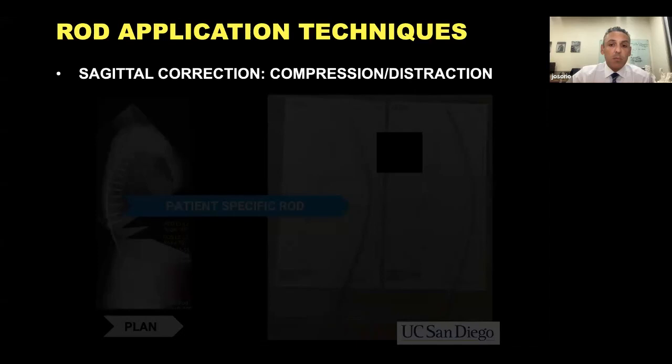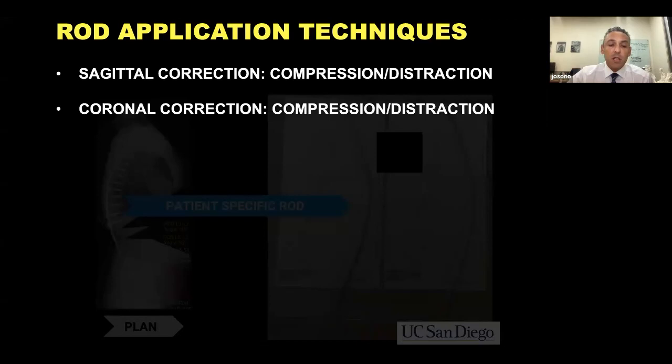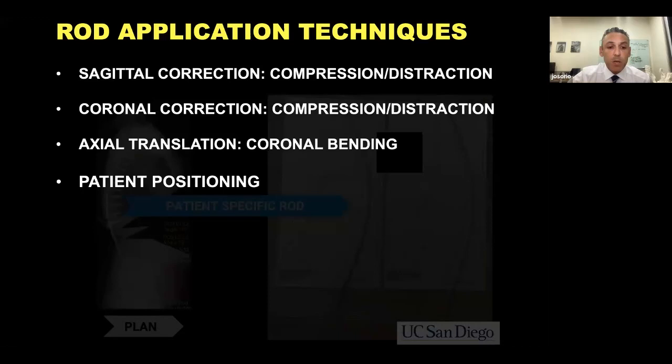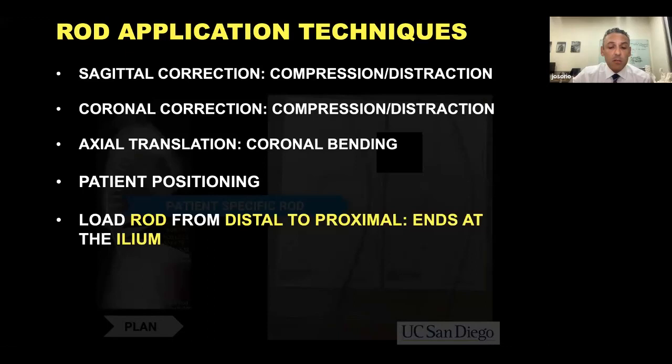When thinking about sagittal correction, sometimes you're applying compression and distraction maneuvers on your screws and rod constructs. The same can be done for coronal correction, and often these are opposite to each other. Axial translation — I'll show a video and some figures on this — is often done through coronal bending. You can't lose sight of patient positioning; it's important to leverage patient positioning, especially in the adult deformity patient.